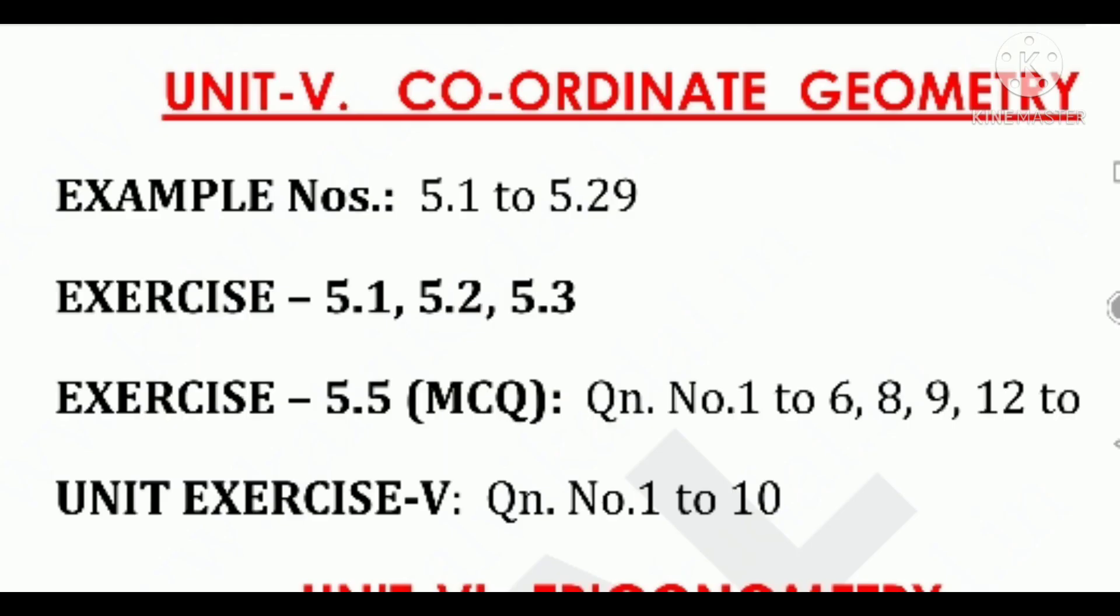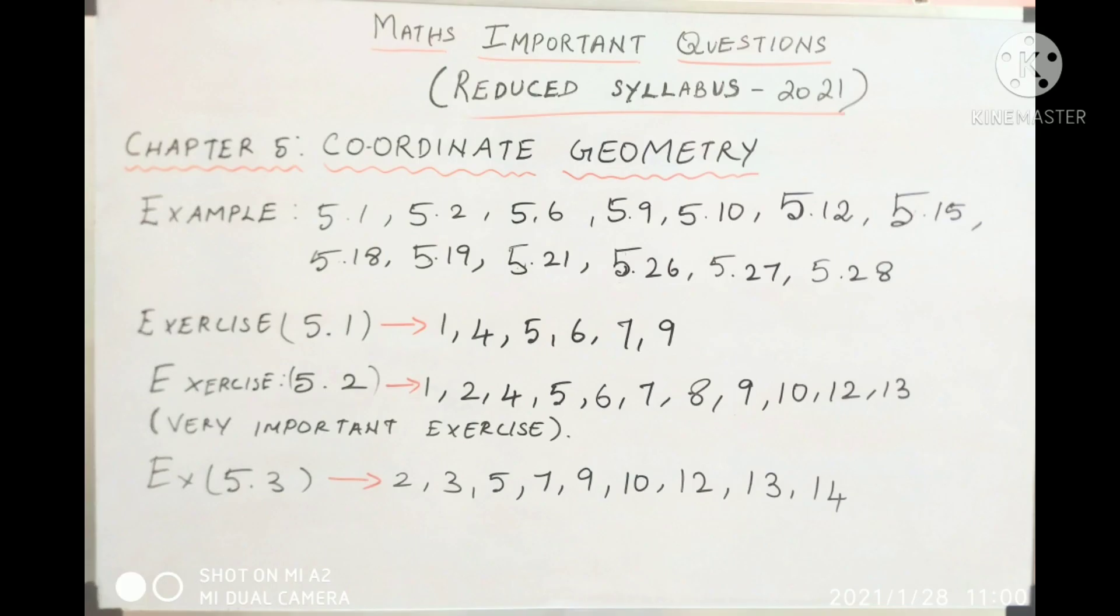Coordinate geometry: exercise 5.5, 9 to 15, 12 to 15. Unit exercise 1 to 10. Example 5.1, 5.2, 5.6, 5.9, 5.10, 5.12, 5.15, 5.18, 5.19, 5.21, 26, 27 and 5.28. Exercise 5.1: 1, 4, 5, 6, 7 and 9. Exercise 5.2: 1, 2, 4, 5, 6, 7, 8, 9, 10, 12 and 13. It is very important exercise. Exercise 5.3: 2, 3, 5, 7, 9, 10, 12, 13 and 14.